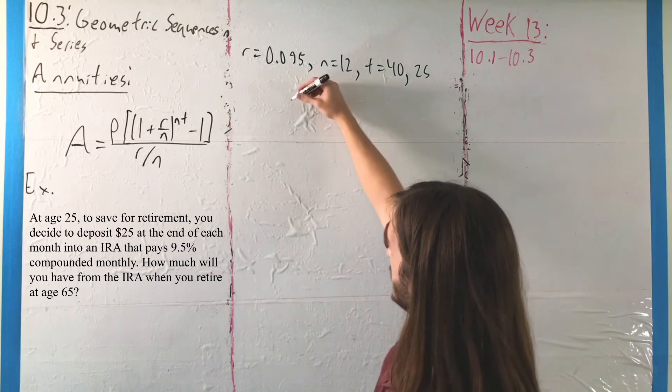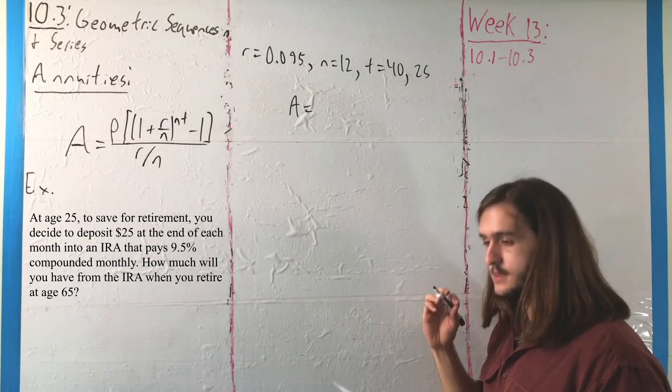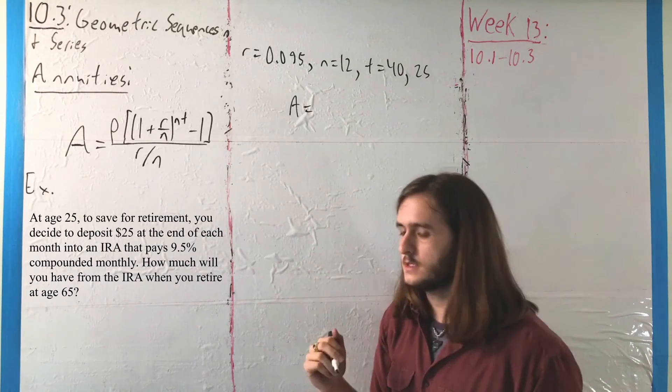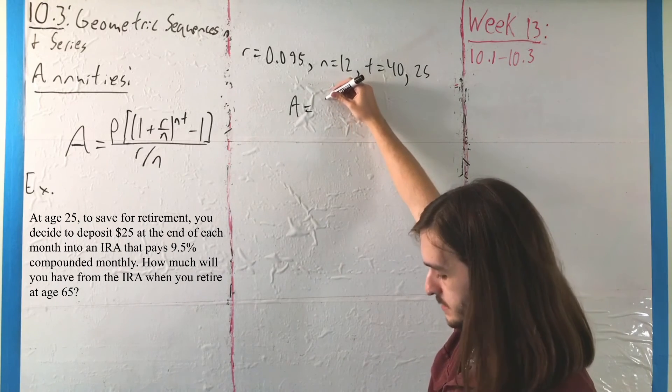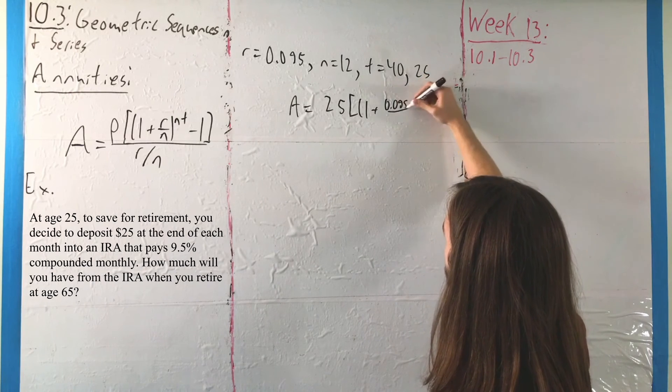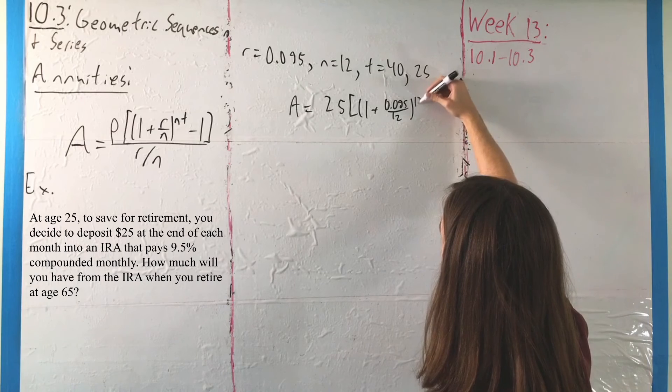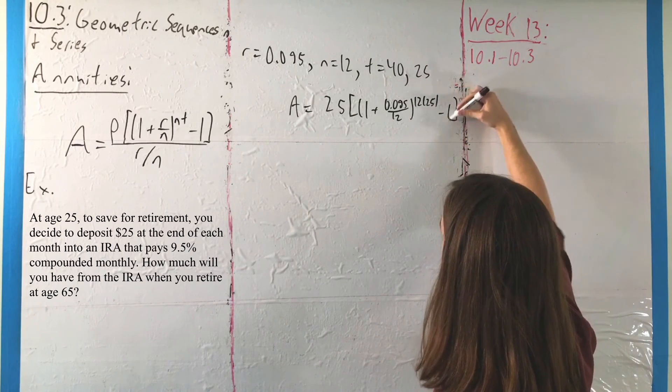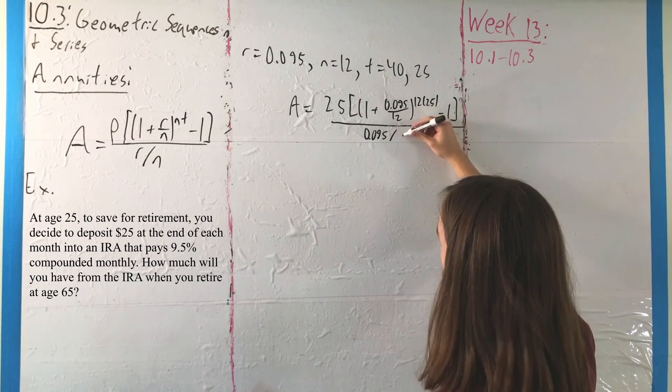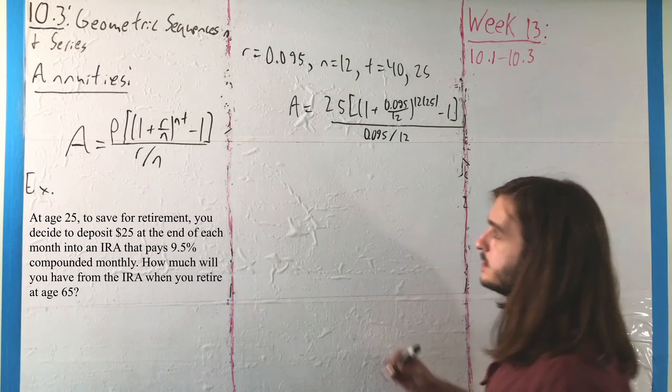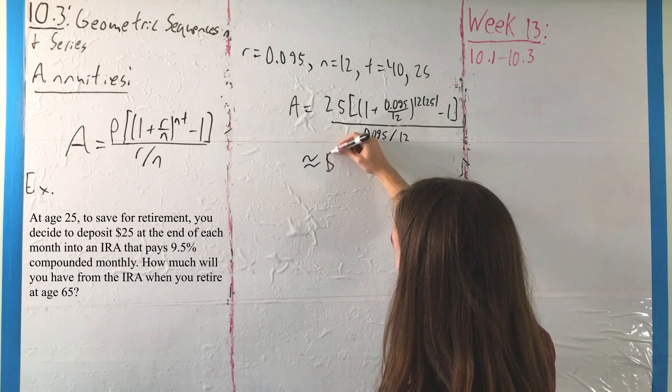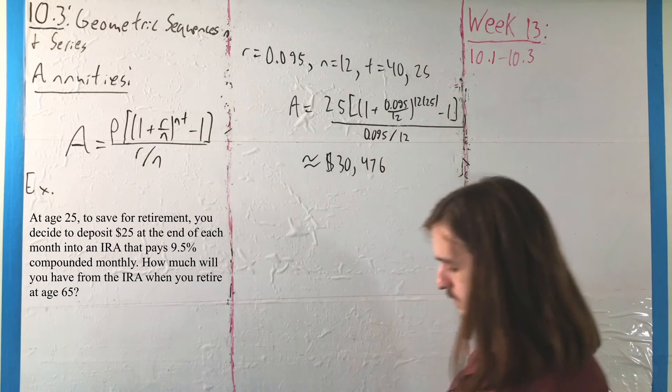So if you want to get the value for A, the total amount that you'll have at that point in just that account, usually when you get a job that has an actual salary to it, they'll have retirement accounts that you can get set up that will go direct deposit into there as well. But if you're talking about this individual retirement account here, you would have P is 25 multiplied by the quantity 1 plus 0.095 divided by 12 raised to the power 12 times 25 minus 1, close that quantity, and divide it by that 9.5%, 0.095, over the number of compounding periods here, which is 12. Pull all those things around there, and with even that small investment of $25 a month, in that 40 year time frame, you will end up with $30,476 in the account.